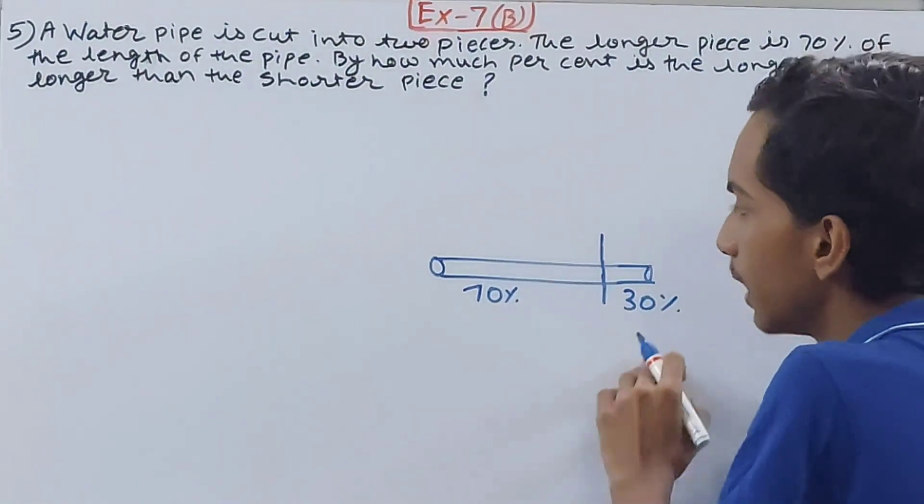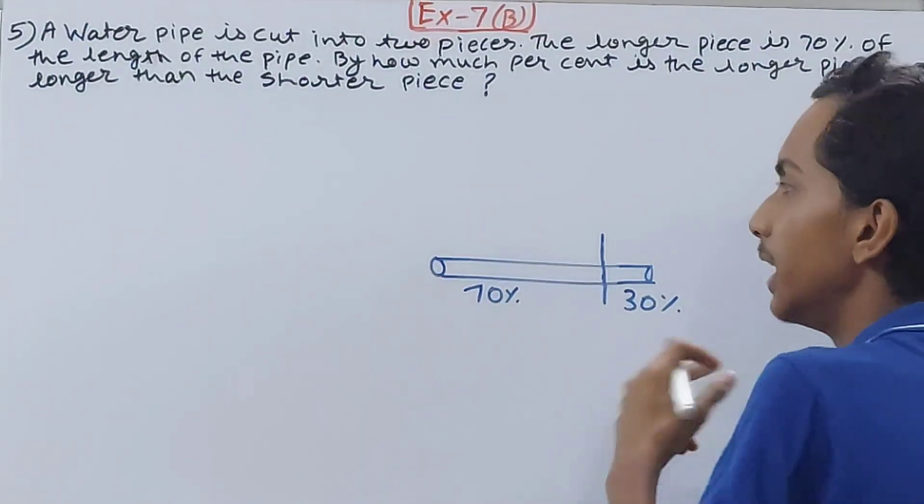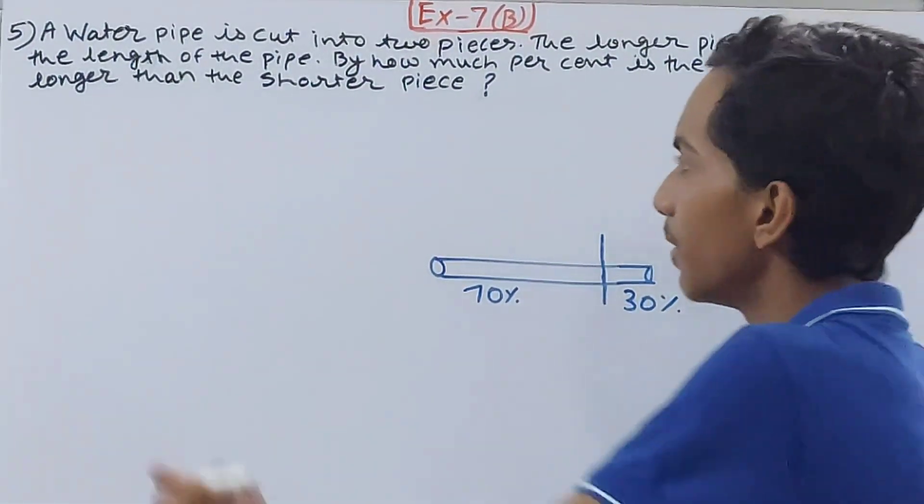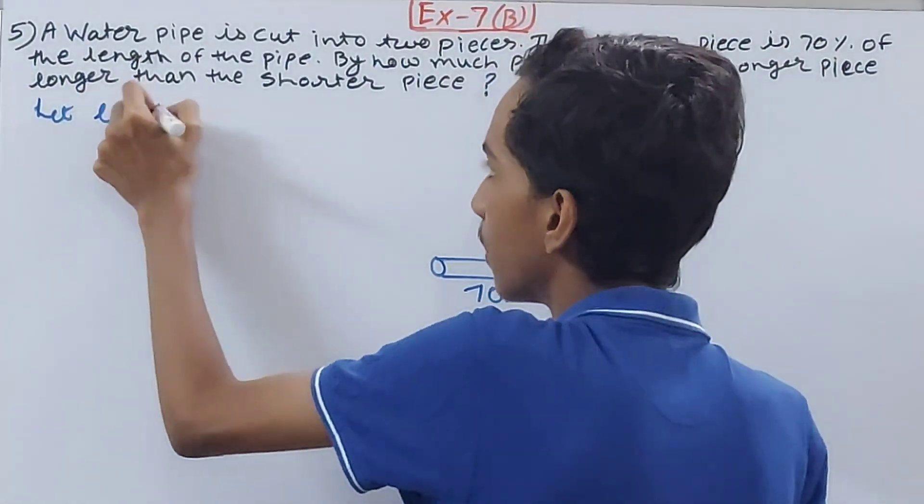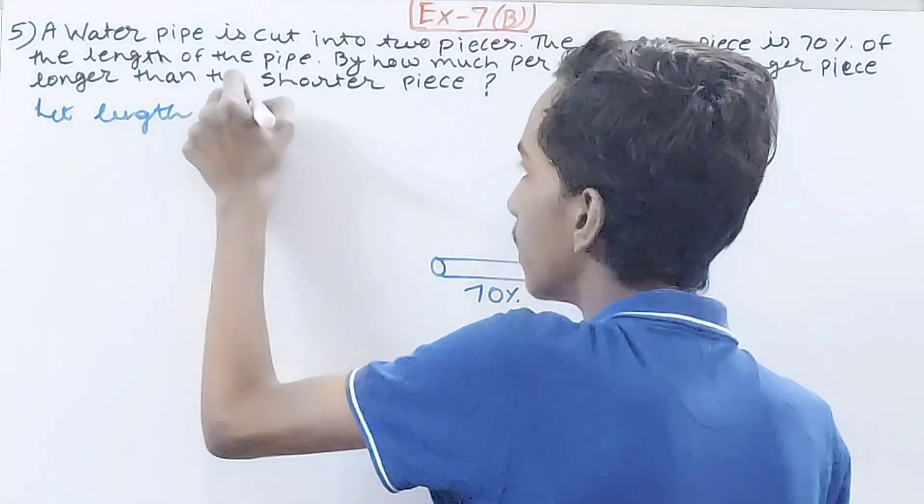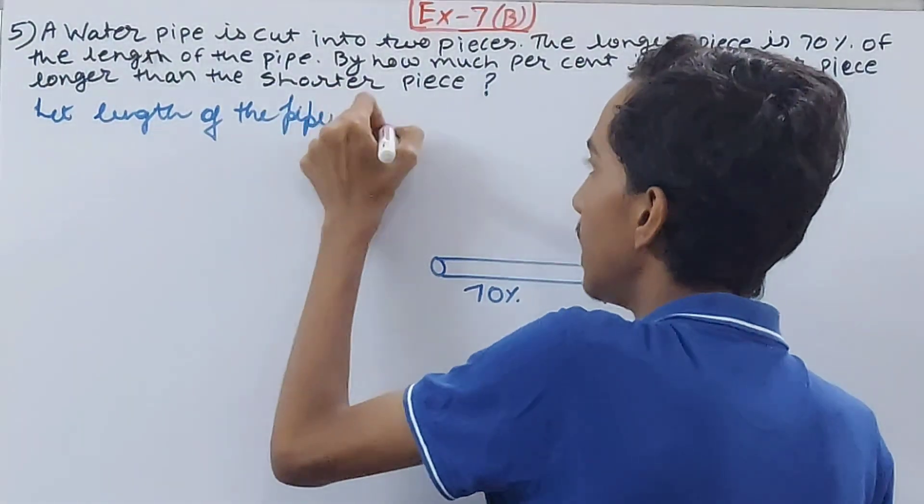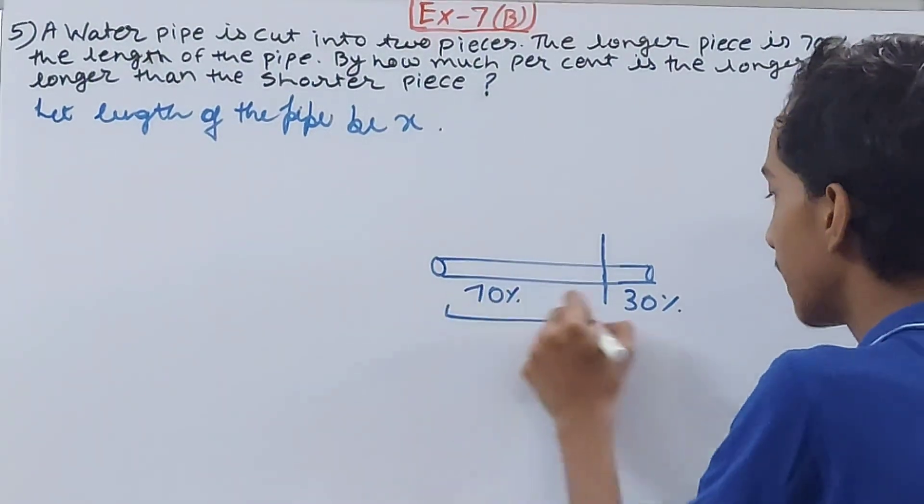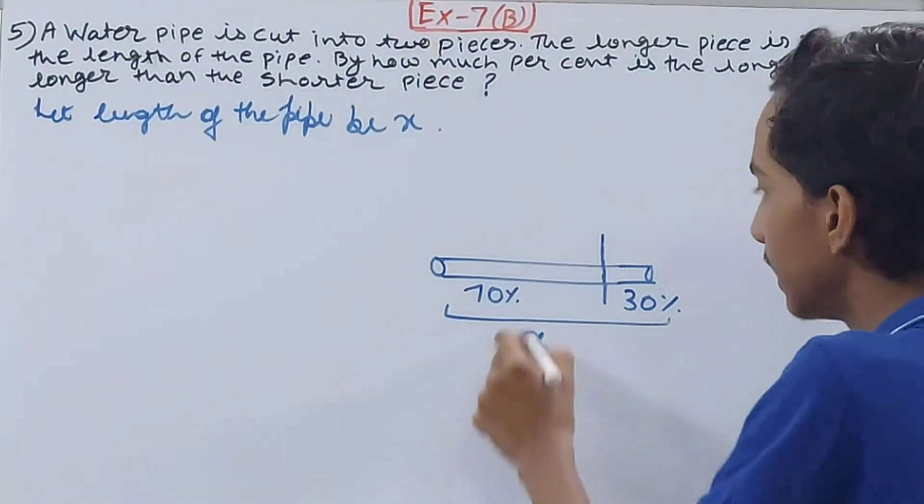So this is the scenario we have. Now we don't know the length of the pipe. If we knew it, it would have been very easy, but we don't know. What we will do is assume: let length of the pipe be x.